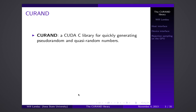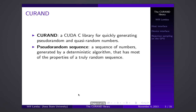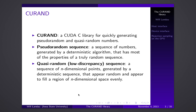cuRAND has a host interface and a device interface. I'm going to go over both, then go over a rejection sampling example on the GPU because statisticians like rejection sampling. With cuRAND you can generate pseudorandom and quasi-random numbers. A pseudorandom sequence is a sequence of numbers generated by some deterministic algorithm — random numbers generated by a computer aren't actually random. They appear random when checked for certain metrics, but it's really just a deterministic sequence.